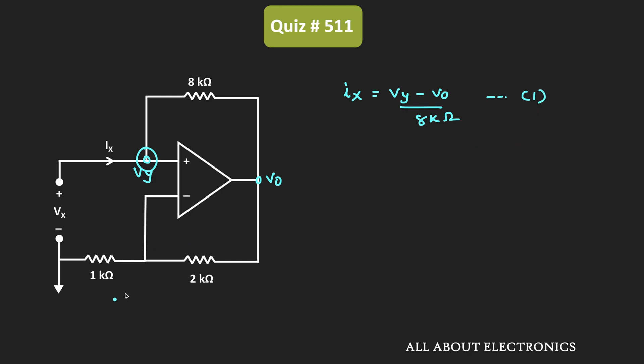So here because of the negative feedback, the voltage at this node will also be equal to Vy. Because as you know, with the negative feedback in the op-amp, we can apply the concept of the virtual ground or the virtual short. That means the voltage at this node is also equal to Vy.